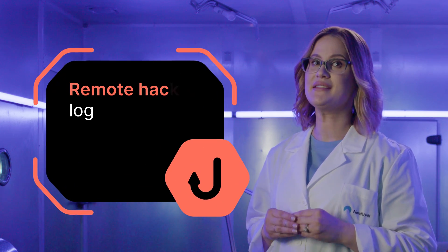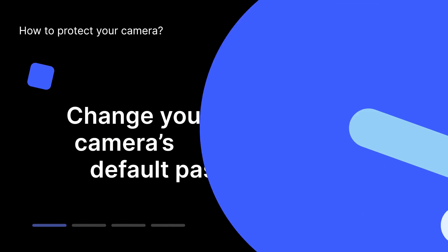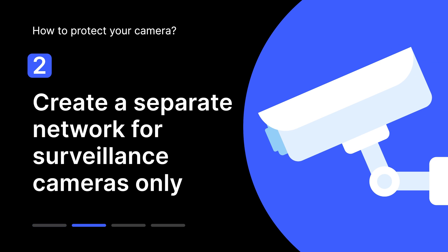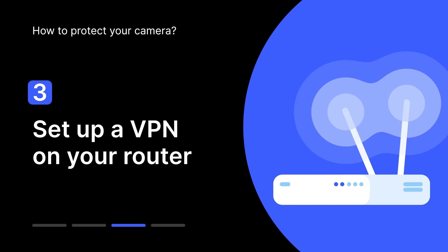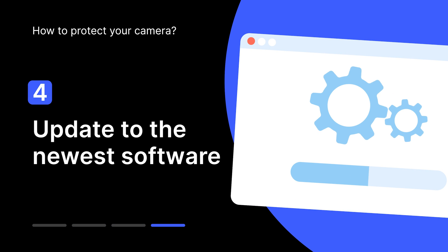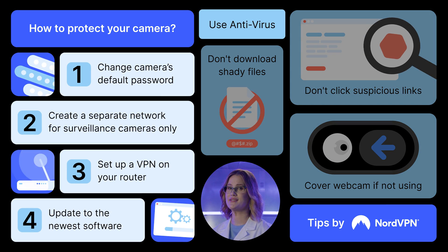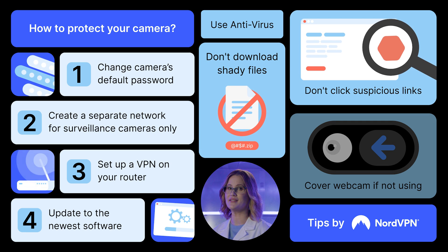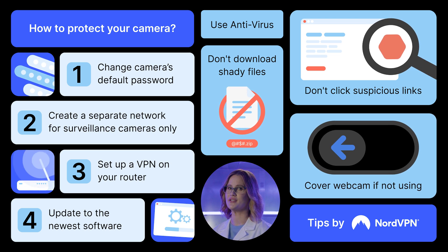Hackers acquire credentials by sending phishing emails or searching for leaked data online. What can you do to protect your cameras? One, change your camera's default password. Two, create a separate network for your surveillance cameras only. Three, set up a VPN on your router. Four, update to the newest software. Protecting your webcam starts with a strong antivirus. Also, you should never click on suspicious links or download shady files. You can also cover your webcam — this method is very efficient. Thanks for watching, I'm going back to private mode.